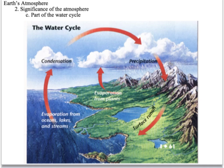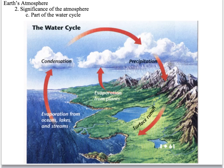Without the atmosphere, we wouldn't have the water cycle. Water evaporates from oceans, lakes, and streams, and evapotranspiration occurs from plants. Water is part of the atmosphere — water vapor is actually a greenhouse gas — and it comes down as precipitation. So the water cycle happens within the atmosphere.